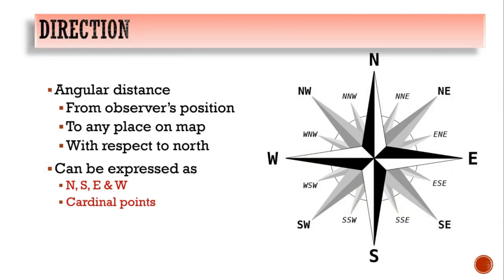The next element is direction. Direction is the angular distance from an observer's position to any place on the map with respect to north. It can be expressed as north, south, east, and west, and these points are known as cardinal points.